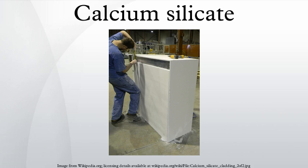Calcium silicate is the chemical compound Ca2SiO4, also known as calcium orthosilicate and sometimes formulated as 2CaO·SiO2. It is one of a group of compounds obtained by reacting calcium oxide and silica in various ratios, for example 3CaO·SiO2 (Ca3SiO5), 2CaO·SiO2 (Ca2SiO4), 3CaO·2SiO2 (Ca3Si2O7), and CaO·SiO2 (CaSiO3).